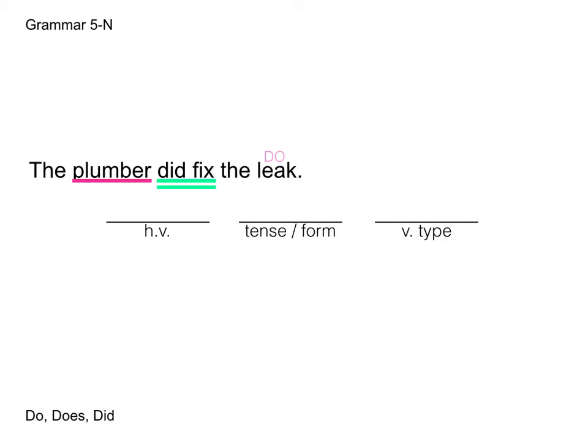Now we go through and identify each part. What is our helping verb? Did. Did is our helping verb. Fix is our main verb. What tense or form is that in? We could do present, perfect, or progressive — in this instance, we have the present or base form of the verb. What type of verb is it? We could have linking, transitive active, or transitive passive. It is an action verb, so it's not linking. The subject is completing the action and "leak" is receiving the action, making the subject the doer. So it's not transitive passive — we have a transitive active.